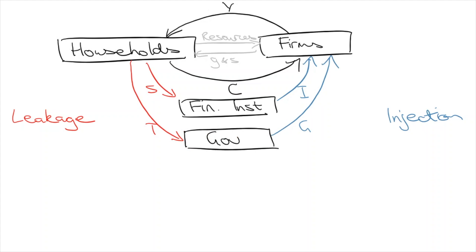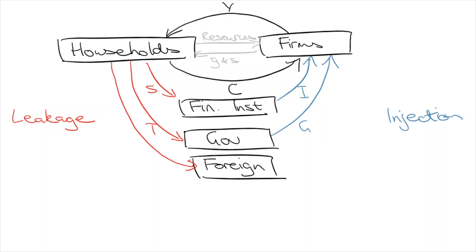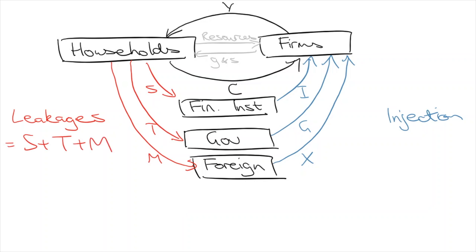Finally, in the five-sector model, we introduce the foreign or international sector. Income leaves the circular flow to this sector via import spending, contracting the economy. But this sector can also contribute export revenue to our economy. So in summary, leakages include savings, taxes, and import spending, while injections include investments, government expenditure, and export revenue.